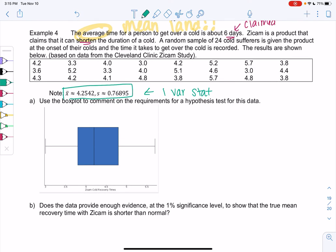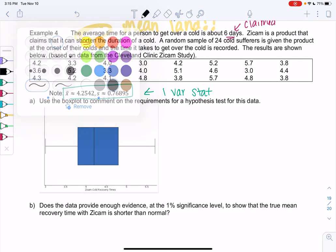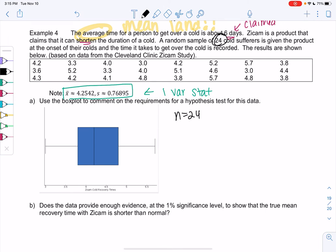So let's comment on the requirements. My sample size is 24. So it's not quite 30, but it is at least 15. So that means we need not severely skewed. Is this box plot severely skewed? No.